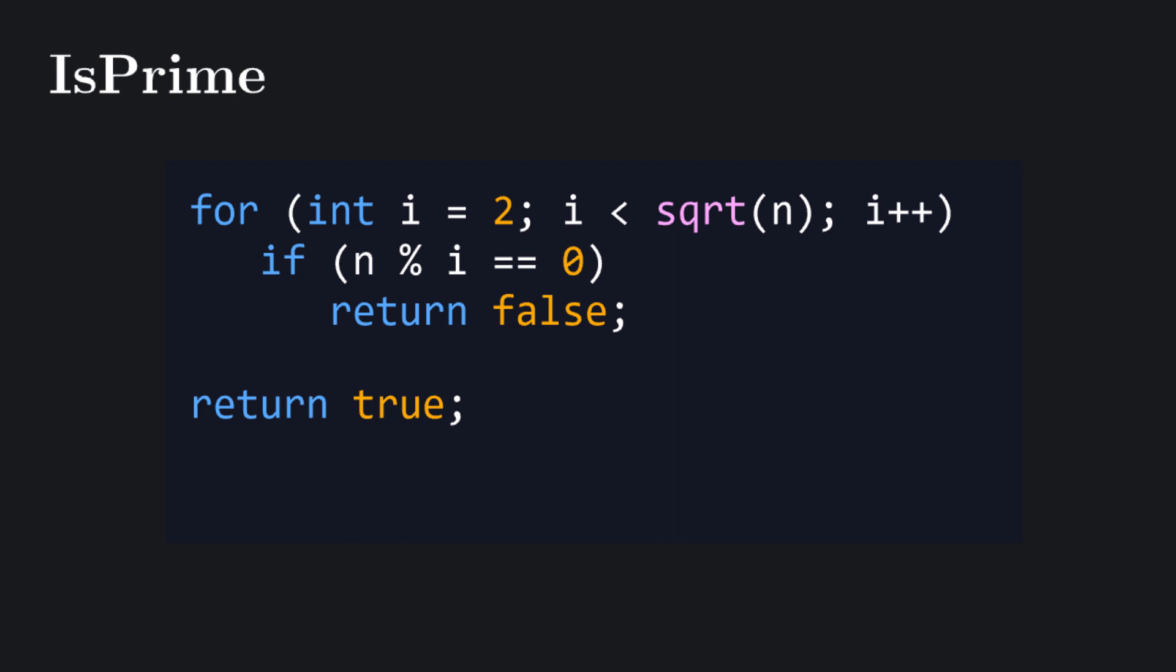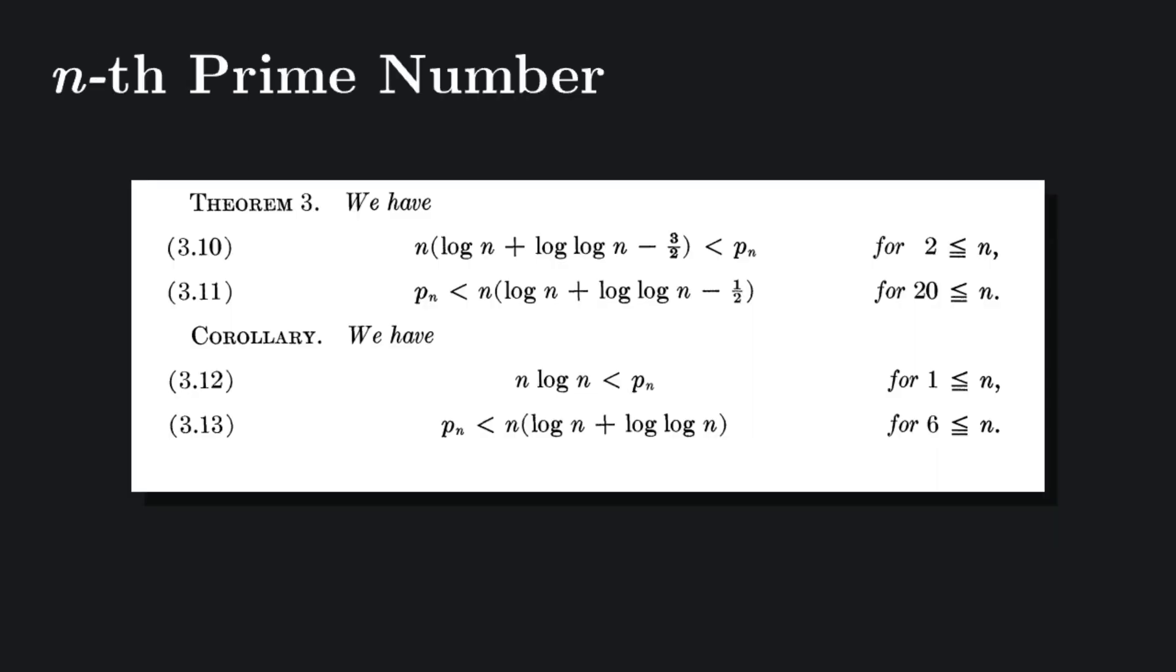A program that determines whether a number n is prime needs only to check if n is divisible by any number between 2 and the square root of n. A program that returns the nth prime number needs only to count primes up to a certain upper bound that depends solely on n.